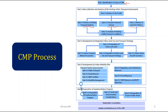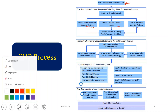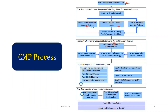The third step is development of an integrated urban land use and transport strategy. This involves preparing a vision and goal for the CMP, developing futuristic transport network scenarios and future urban growth scenarios, and then evaluating the urban land use and transport strategy in view of all these elements to integrate the transport sector with urban land use.